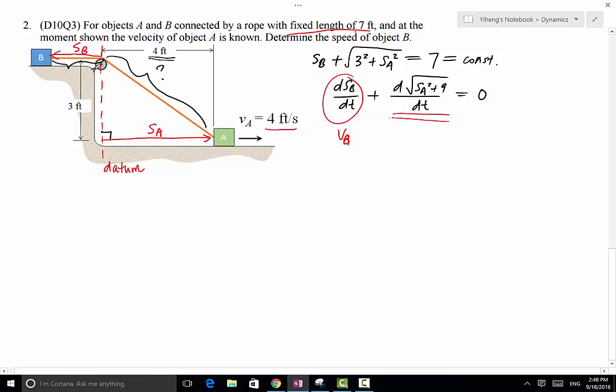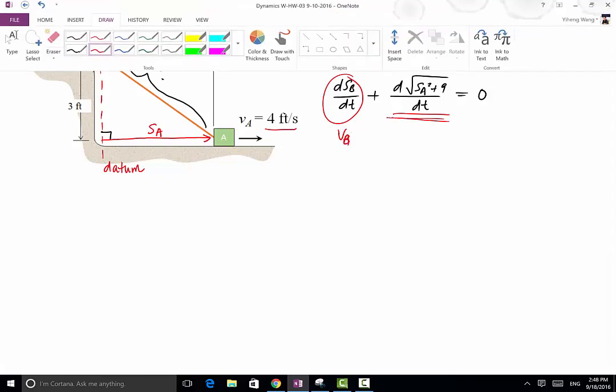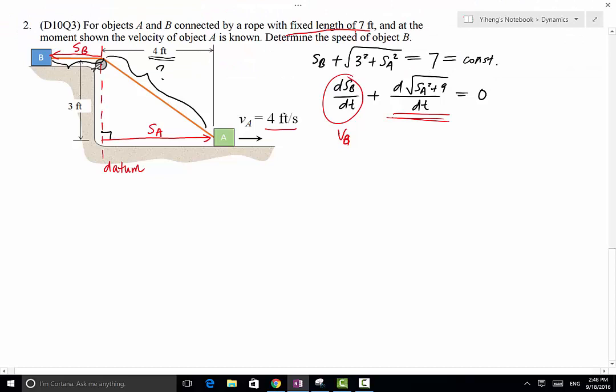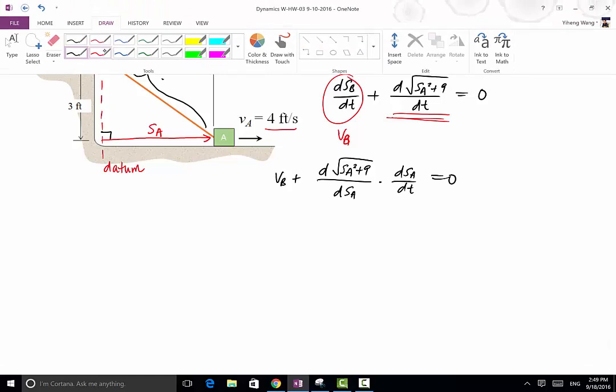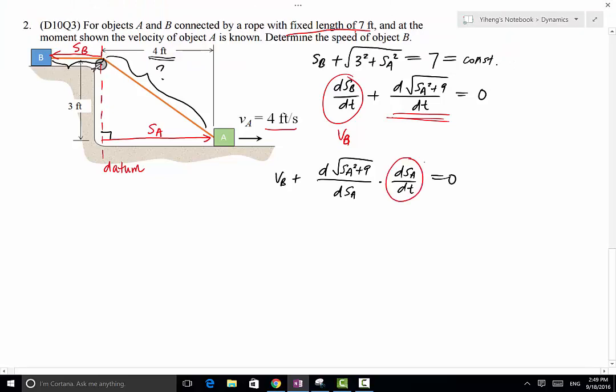So for this part right here, we're going to use the chain rule that you've learned in calculus. So we have VB plus d(SA squared plus 9)/dSA times dSA/dt. And again, the reason we do this is because now this part, dSA/dt, is simply the VA that we already know. So for this part right here, if you cannot find the derivative directly, you can use chain rule again.